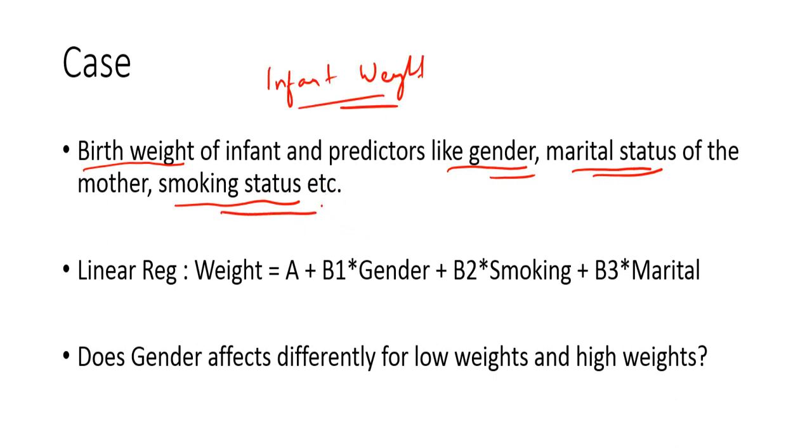In order to model that relationship, we use a linear regression. So the linear regression looks like this: Weight is a function of gender, smoking and marital.